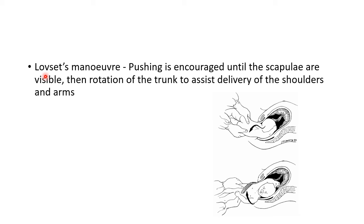In Løvset's manoeuvre, pushing is increased until the scapulae are visible. Then rotation of the trunk is done to assist delivery of the shoulders and arms. Once the scapulae are visible, the trunk is rotated to assist delivery of the shoulders and arms.